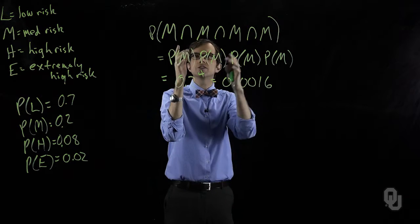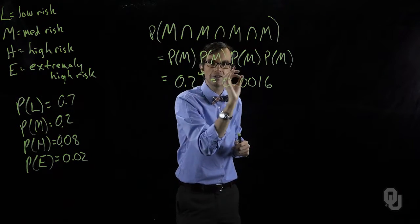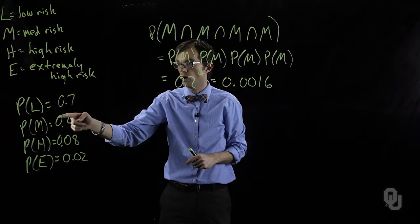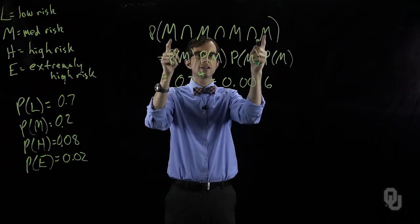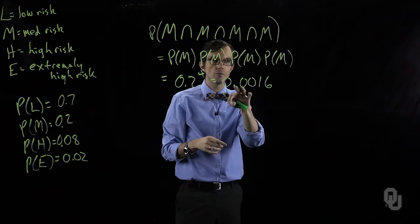Whenever we have an intersection, we are specifying that these four things in a row have to be these very specific things. Each one of them has a probability that's less than one. Whenever you multiply those things together, you get a number that keeps getting lesser and lesser.